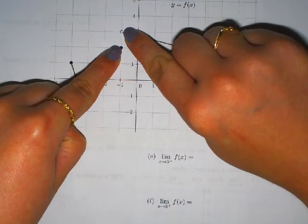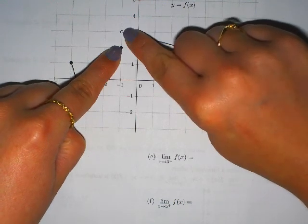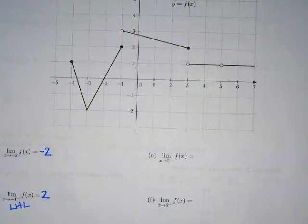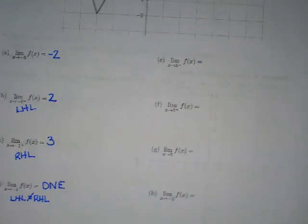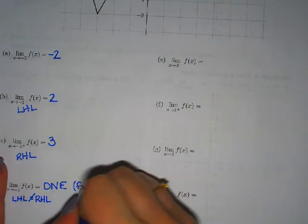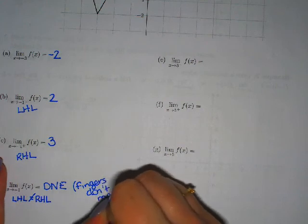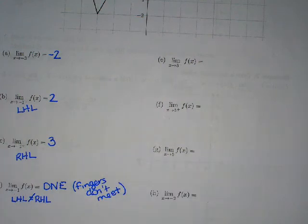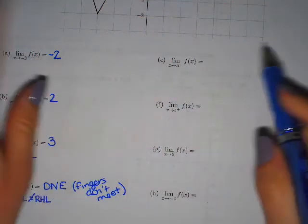We can't choose between 2 and 3 — we can't say we prefer the closed circle or the open circle. We simply say does not exist. If your fingers do not meet, the limit does not exist. If the left-hand limit does not equal the right-hand limit, it does not exist.